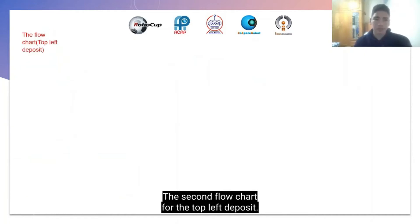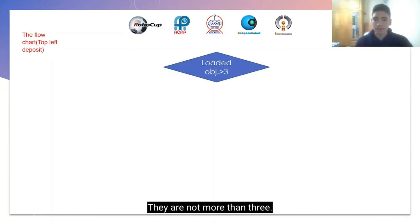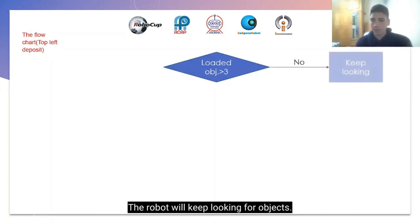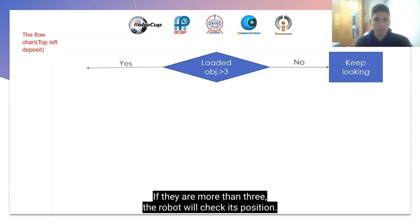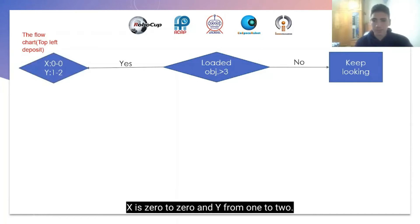The second flow chart is for the top left deposit. The robot checks the loaded objects — they should be more than 3. If they are not more than 3, the robot will keep looking for objects. If they are more than 3, the robot will check its position. The position should be x0 to 0 and y1 to 2.